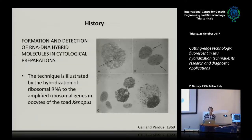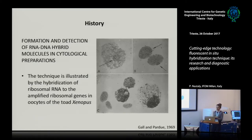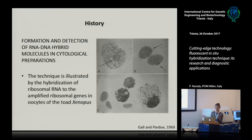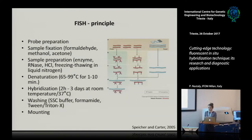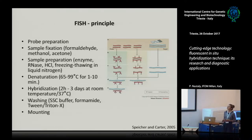The history of cytohybridization started in 1969 with the discovery that ribosomal RNA hybridized to the amplified genes of Xenopus oocytes. I would like to start by giving you an overview of the FISH procedure.